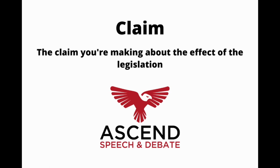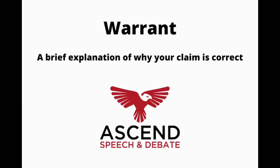Each argument is expected to follow something called a CWDI structure, which stands for Claim, Warrant, Data, Impact. A claim is what you're claiming the legislation will do and a reason you're advocating for the affirmation or negation. For example: 'First, pass this bill because it reduces income inequality.' The warrant is a brief explanation of why your claim is correct, coming right after your claim, usually phrased like: 'first pass this bill because [claim] — and that's because [warrant].' For a $15 minimum wage bill, claim and warrant together would sound like: 'first, pass this bill because it reduces income inequality — and that's because it increases wages for low-income workers.' Every claim you make needs to be backed up with data, which is evidence to support your point. You always want at least two sources per speech, and most top-level debaters cite anywhere between three and five cards per speech.